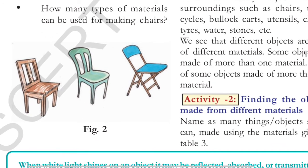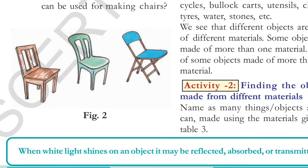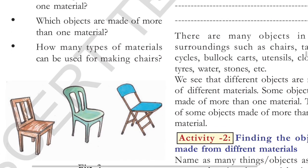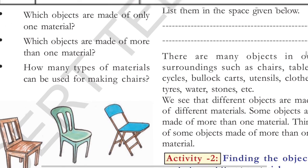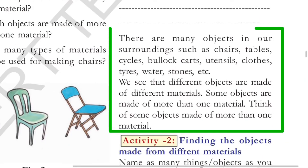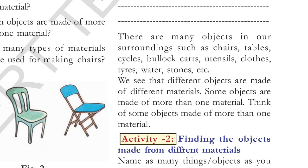Students, you can see the images in figure two — the images of chairs. The first image is a wooden chair, next is a plastic chair, and next is a metal chair. List them in the space given below. There are many objects in your surroundings such as chairs, tables, cycles, utensils, clothes, tires, water, stones, etc. We see that different objects are made of different materials. Some objects are made of more than one material.